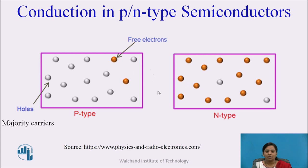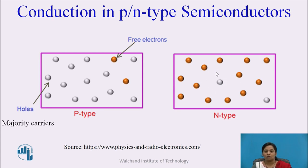The N-type semiconductor is made up by adding a pentavalent impurity into pure semiconductor, so the addition of this impurity provides a large number of free electrons. So current conduction in N-type semiconductor is due to electrons. Majority charge carriers here are electrons, and minority charge carriers are holes.